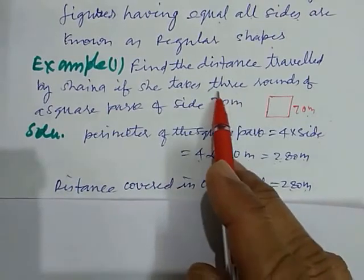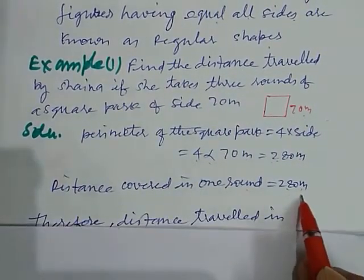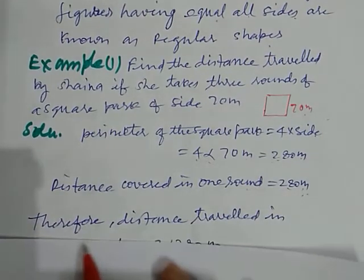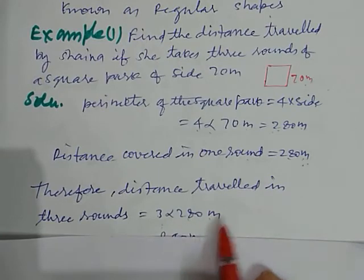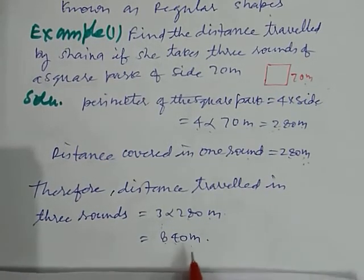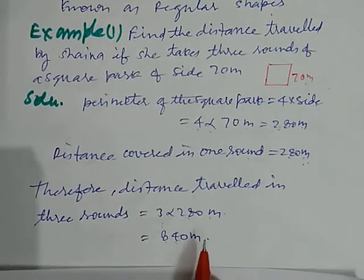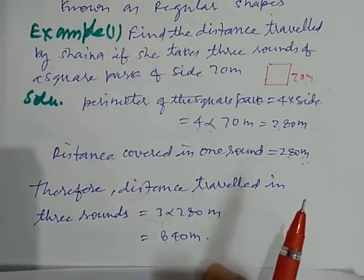And here there is three round. So we multiply this distance by three. Therefore distance travelled in three round equals 3 into 280 meter. So we get 840 meter. So this way we can calculate the perimeter of regular shapes.